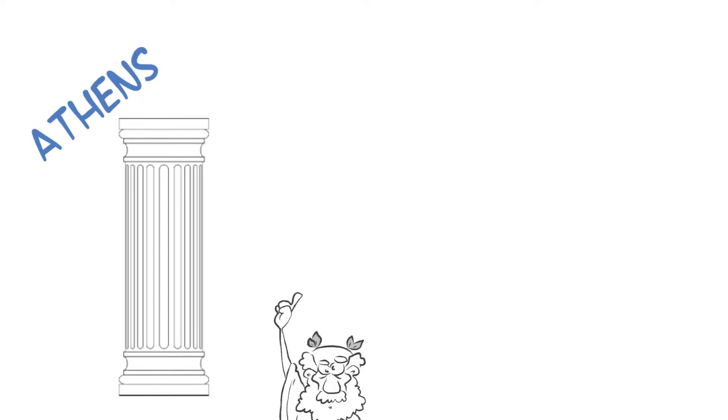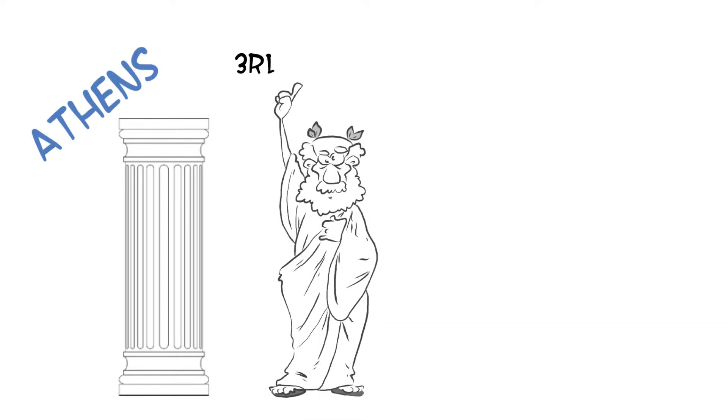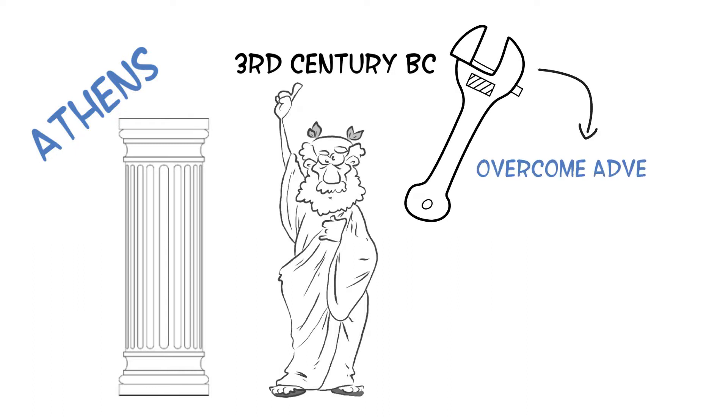Stoicism is an ancient Greek philosophy founded in Athens by Zeno of Citium in the early 3rd century BC. Today, Stoicism is a tool that we can use to overcome difficulties and adversity, to become less emotionally reactive and to better resolve conflicts.